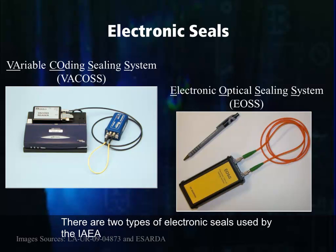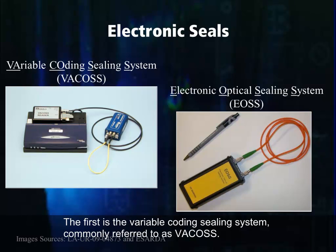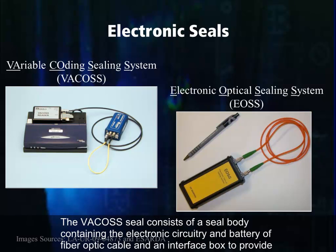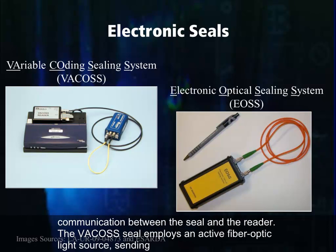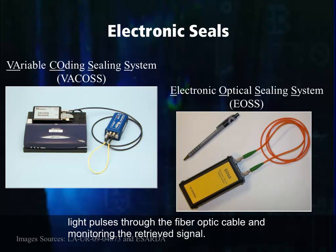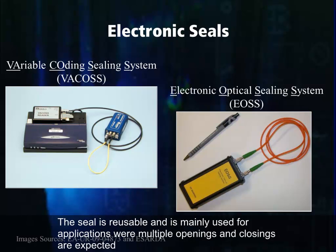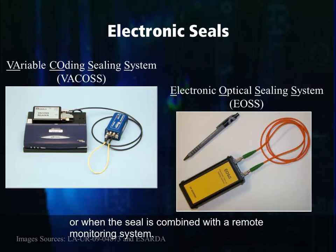There are two types of electronic seals used by the IAEA. The first is the variable coating sealing system, commonly referred to as VACOS. The VACOS seal consists of a seal body containing the electronic circuitry and battery, a fiber optic cable, and an interface box to provide communication between the seal and the reader. The VACOS seal employs an active fiber optic light source sending light pulses through the fiber optic cable and monitoring the retrieved signal. The seal is reusable and is mainly used for applications where multiple openings and closings are expected or when the seal is combined with a remote monitoring system.